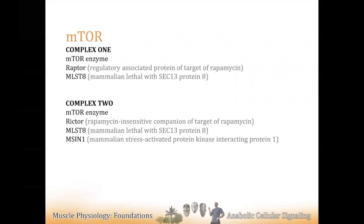Rag GTPases — that's for nutrient sensitivity, amino acid sensing. On the carbohydrate side you're looking at insulin binding to its receptor, PI3K, PKB, and that signaling cascade. Rag is for protein/amino acid sensing — we'll get there, probably by Wednesday. RAFT1 and FRAP are alternative names for the actual mTOR enzyme itself, and they both include FKBP12, which I'll show you in just a second.